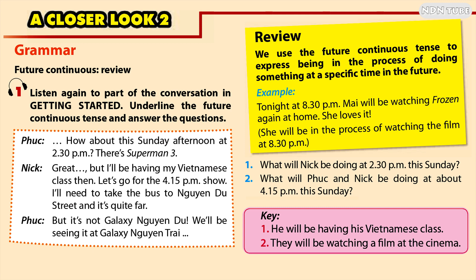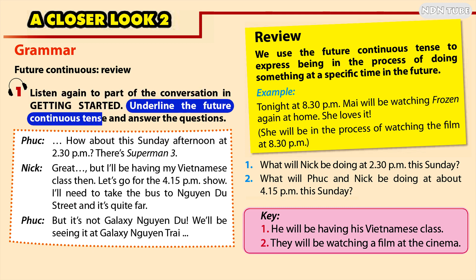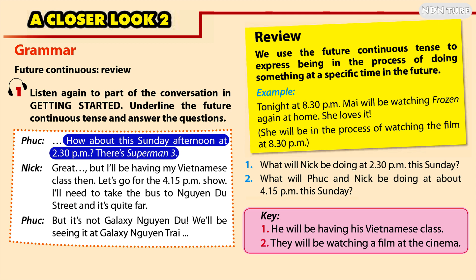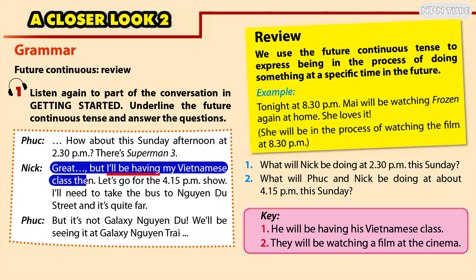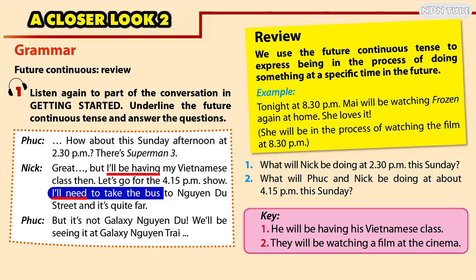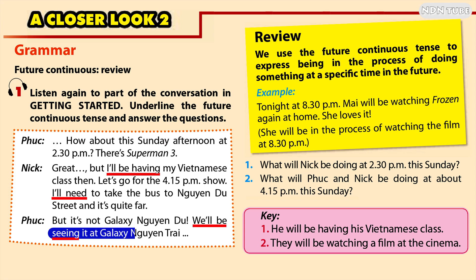A Closer Look 2, Activity 1: Listen again to part of the conversation in Getting Started. Underline the future continuous tense and answer the questions. 'How about this Sunday afternoon at 2.30pm? There's Superman 3.' 'Great, but I'll be having my Vietnamese class then. Let's go for the 4.15pm show.' 'I'll need to take the bus to Win You Street and it's quite far. But it's not Galaxy Win You — we'll be seeing it at Galaxy Win Chai.'